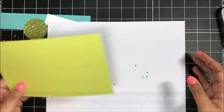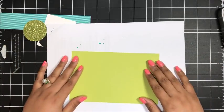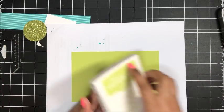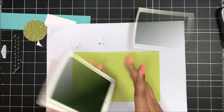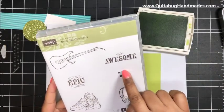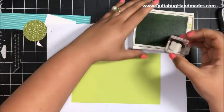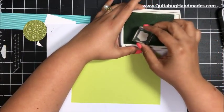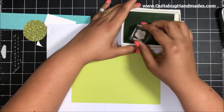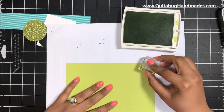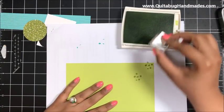I'm going to start with this piece of Lemon Lime Twist, cut at four and a half inches by seven inches. We're actually going to do some background stamping. I'm going to bring in a scratch sheet of computer paper, my Lemon Lime Twist ink pad.